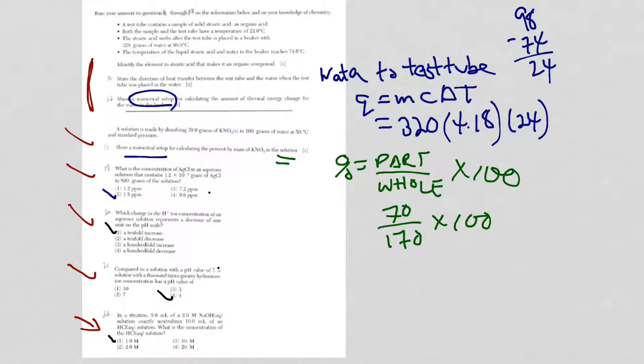Okay, so welcome back. Let's check it out. For question 16, heat transfer. You know it's always from hot to cold. So the test tube and the water, the water is hotter, just check the temperature. 98 grams. Test tube is colder, 22. So water to the test tube.